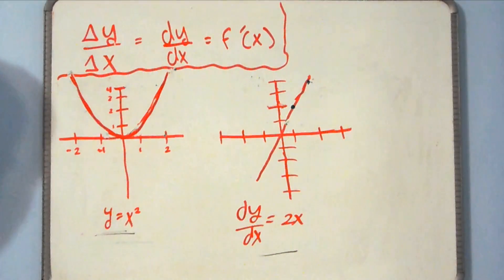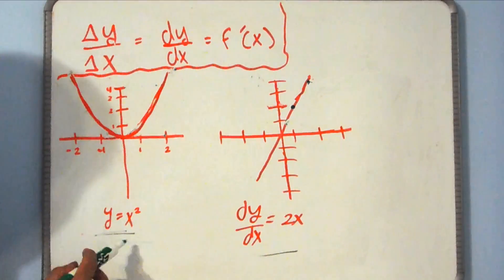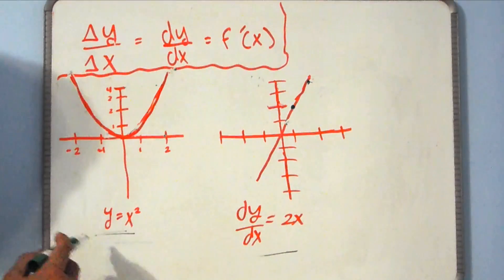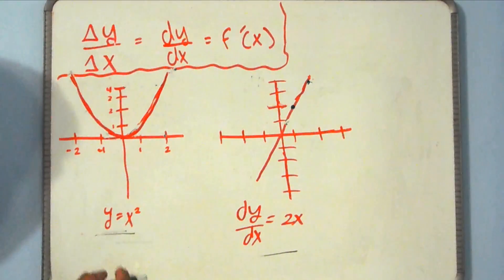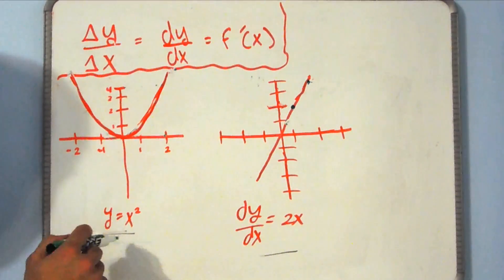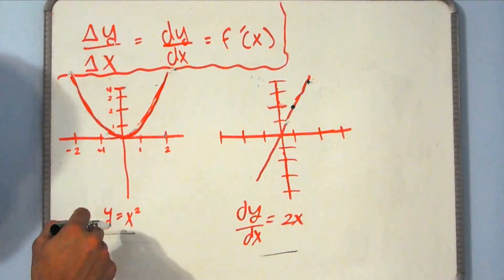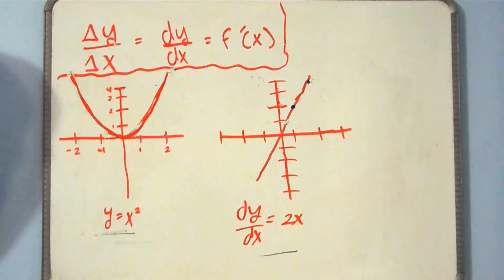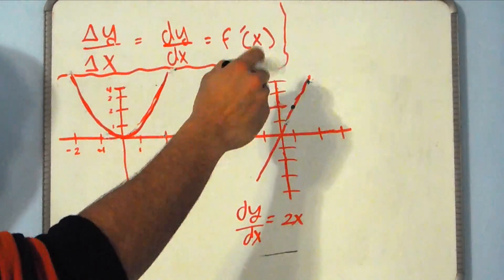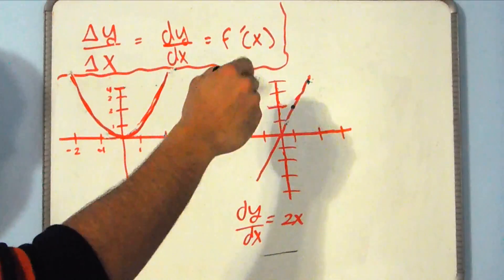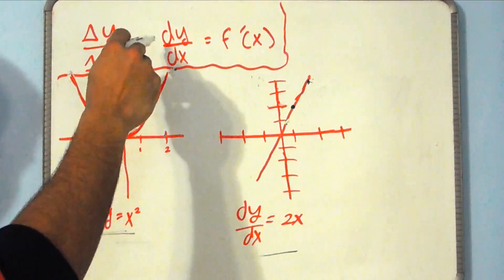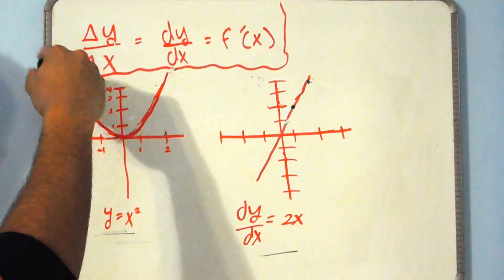So let's say I give you y equals x squared, and let's say I tell you that the derivative of y equals x squared — well, the slope of this function is 2x. And it looks kind of weird because somehow this line is the slope of this parabola.